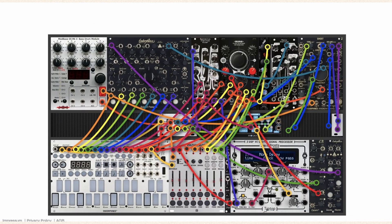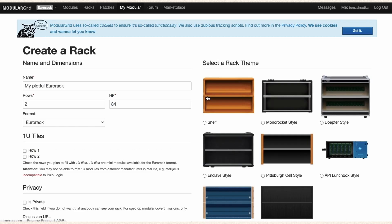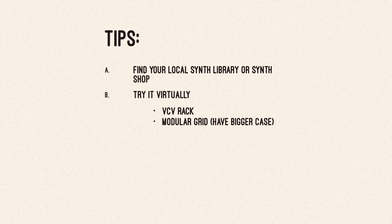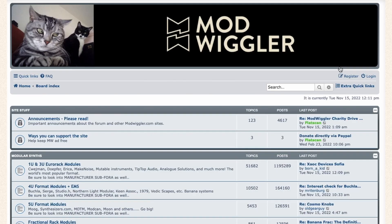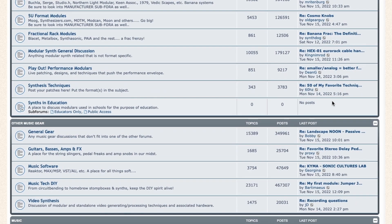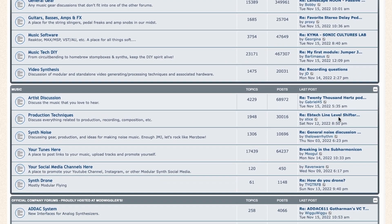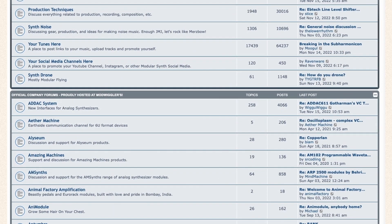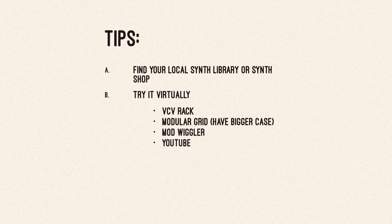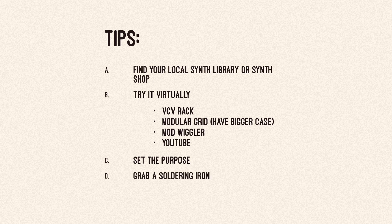I highly advise you to get a bigger case — it's always better than not having space for new modules. Modwiggler is a forum where you can talk about all your troubles or your patches; it's a great community whether you're starting out or looking for help with patches or issues. And of course, YouTube. Also think about the purpose of your instrument — whether you want to focus more on ambient or techno, and if you will use another instrument in combination with the modular. And grab a soldering iron — do DIY — because the kits are cheaper and it's lots of fun.